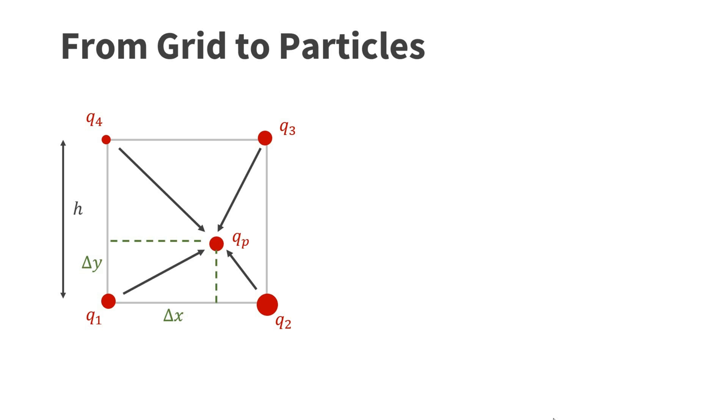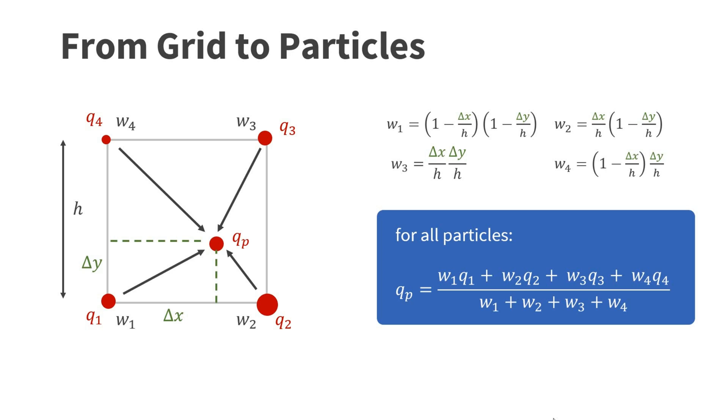Let me first explain how to transfer a general quantity Q from the grid corners to a particle. In this example, Q is closer to corner number two, so we want QP to be closer to Q2 than to Q1, Q3, or Q4. For this, we compute four weights W1, W2, W3, and W4. Using bilinear interpolation, we get these definitions of the weights using the offsets delta X and delta Y. These weights are used to compute QP as a so-called weighted sum of the corner values. We need to be careful if one or more of the values are undefined. If Q2 is undefined, for example, we simply drop it from the numerator as well as the denominator.